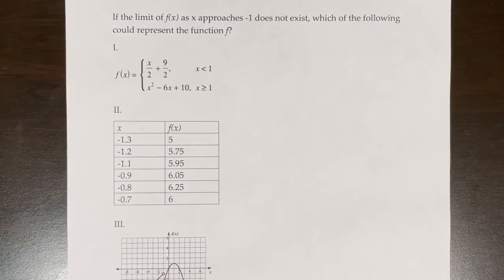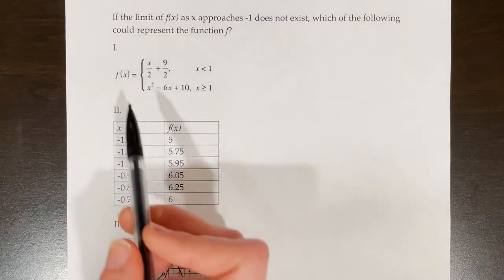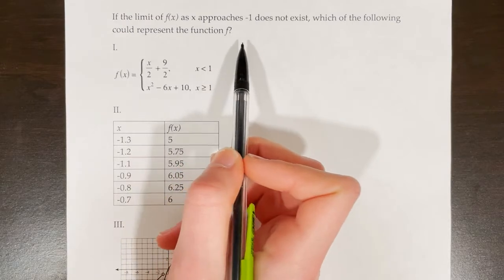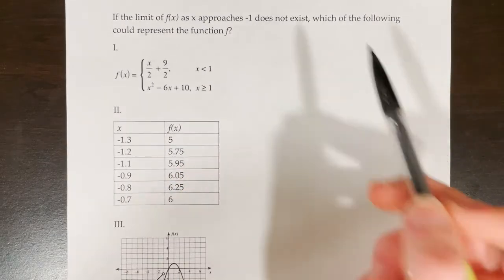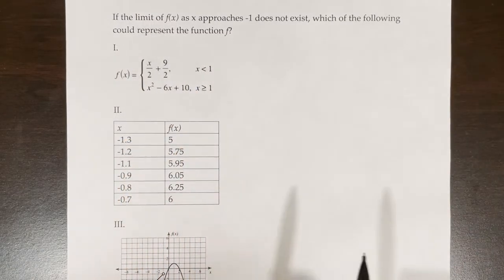Here's another similar question: if the limit of f of x as x approaches negative 1 does not exist, which of the following could represent the function f? Remember that a limit does not exist in a few situations: if the left-sided and right-sided limits don't match, if the y values go to infinity or negative infinity, or if the function is oscillating.